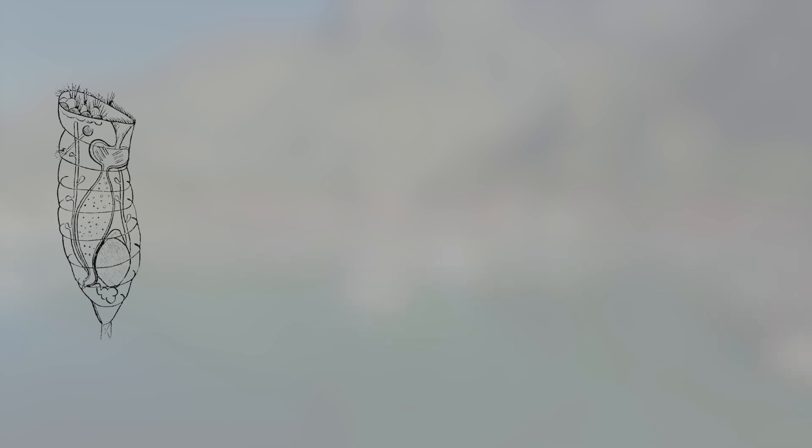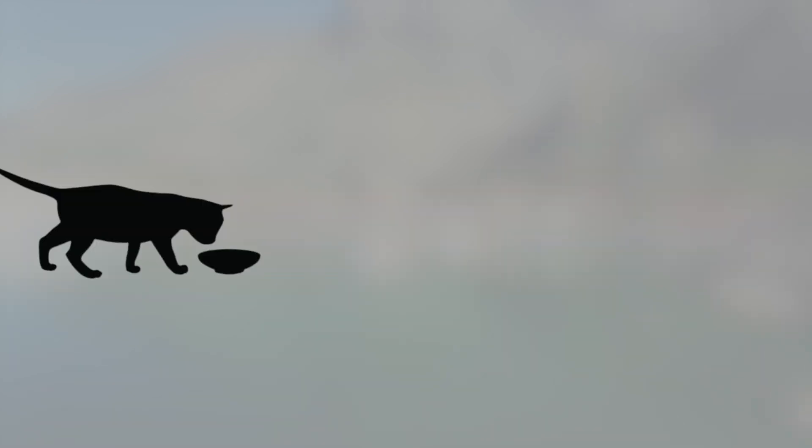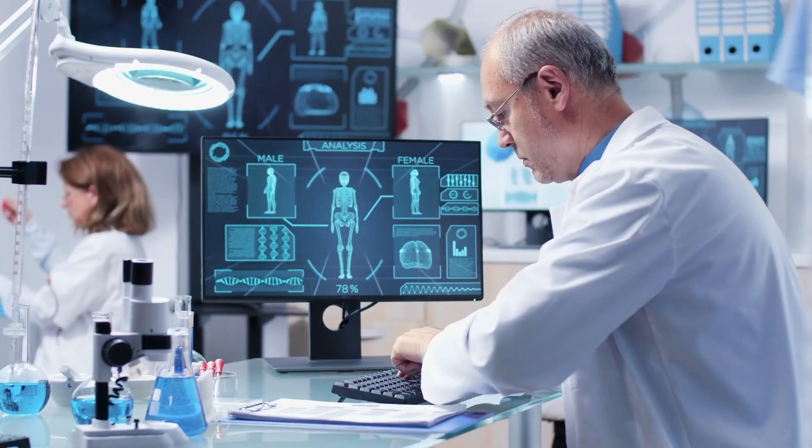And yet this animal, later identified as a bdelloid rotifer, wasn't just surviving. It was swimming, eating, reproducing asexually.